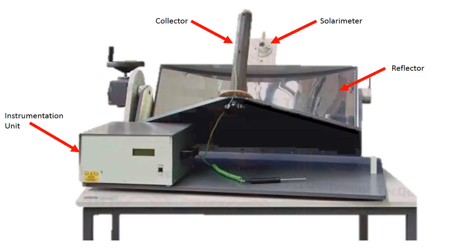An instrumentation unit shows the shaded temperature, the collector temperature, and the incident radiation. An ambient temperature probe measures ambient temperature for reference.